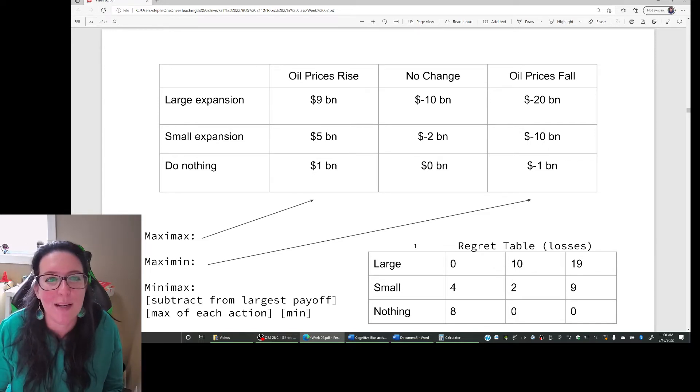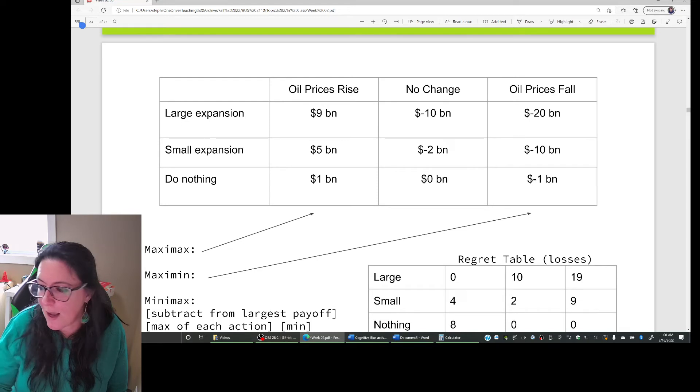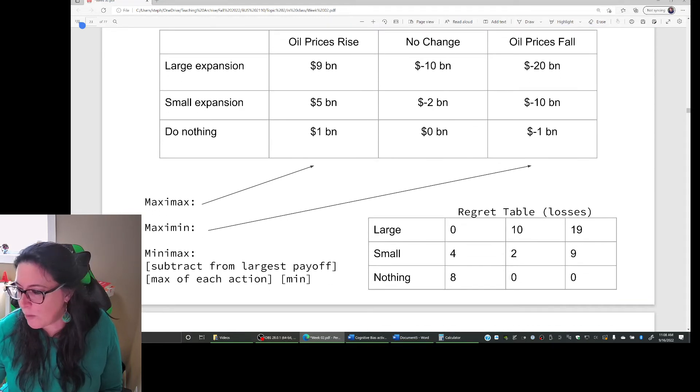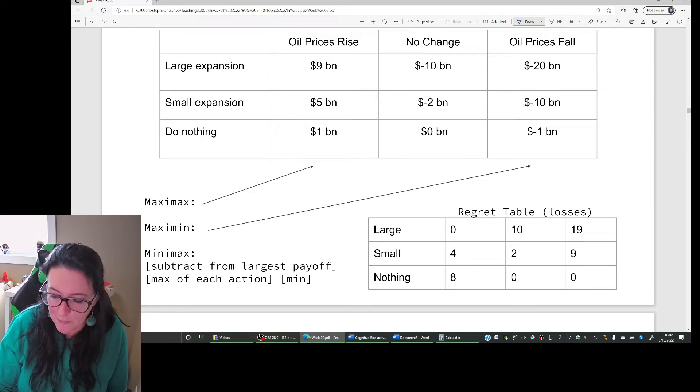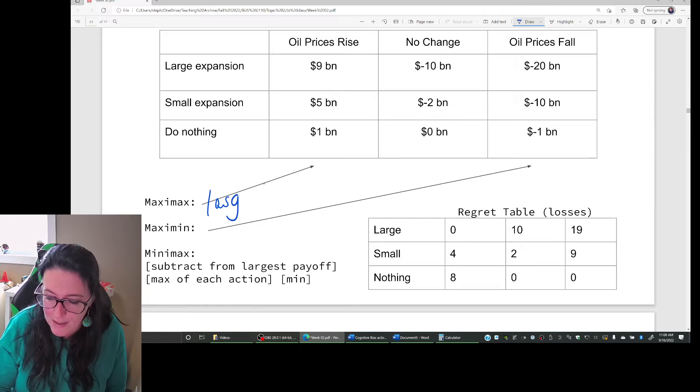If oil prices go up, so maximum option, and we want the max of that. So what is the best scenario given that optimistic outcome? So if oil prices rise, what's best for our company is that we have done a large expansion. We'll make, in this payoff matrix, 9 billion. So under MaxiMax, we would do a large expansion.